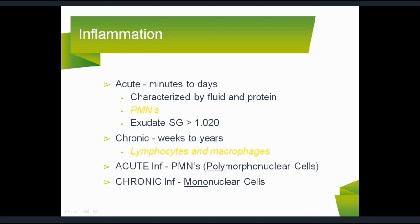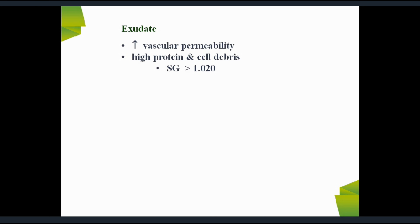What are the differences? In acute inflammation, duration is minutes to days; in chronic, it is weeks to years. Acute inflammation is characterized by fluid and protein known as exudate and plenty of cells. Chronic inflammation is characterized by mononuclear cells. The acute inflammatory cell — a very important exam question — is polymorphonuclear cells or neutrophils and macrophages. Chronic inflammatory cells are mononuclear cells like lymphocytes and plasma cells.